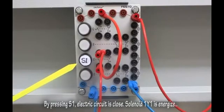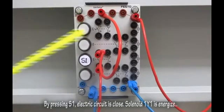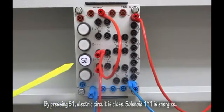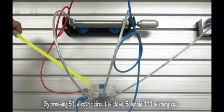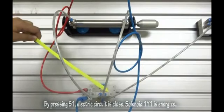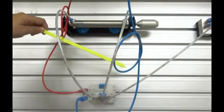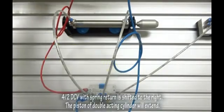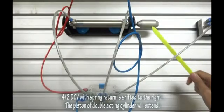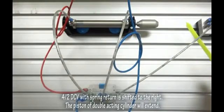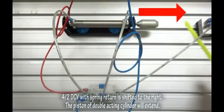By pressing S1, electric circuit is closed. Solenoid 1Y1 is energized. 4 2-way DCV with spring return shifted to the right. The piston rod of double-acting cylinder will extend.